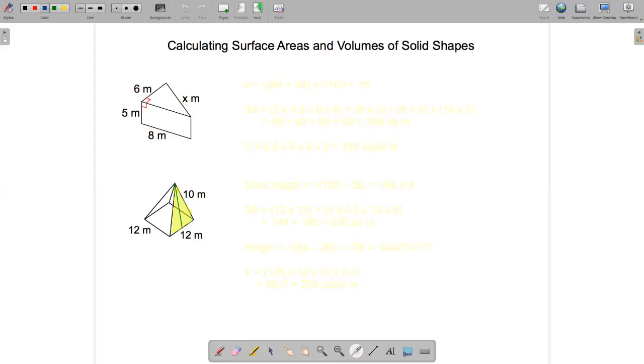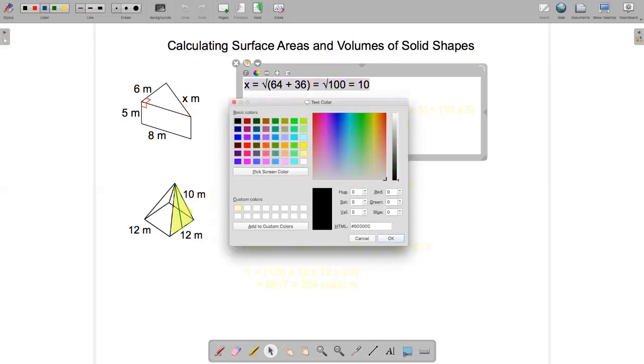So x squared is equal to 8 squared plus 6 squared which is 64 plus 36, so x will be the square root of 64 plus 36 which comes to 100 which is a perfect square, so the square root of that is 10.